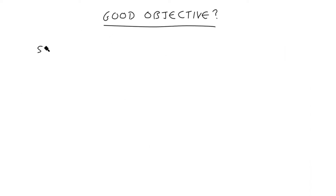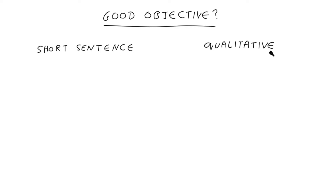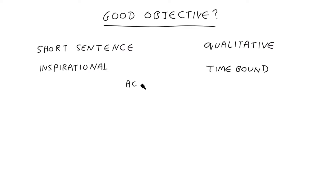What does a good objective look like? A well-designed objective should be a single sentence that is qualitative, inspirational, time-bound, and actionable by the team independently — that way they have no excuses for not getting it done.